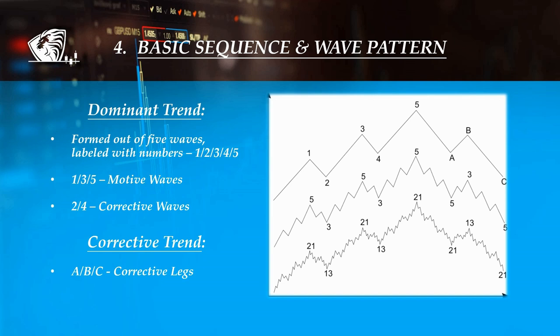Within the five-wave sequence, the three waves which unfold in favor of the dominant trend are separated by two counter-trend interruptions, which are labeled as two and four. These swings represent a temporary interruption of the impulse waves, hence the reason why they are called corrective waves.